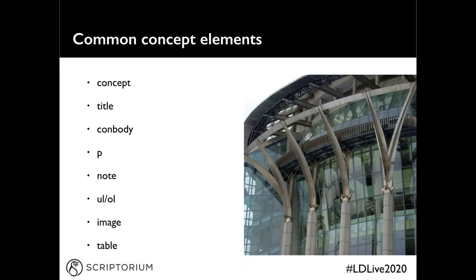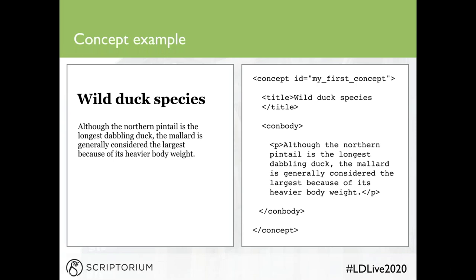Common concept elements include: concept (the container element), title, conbody (the concept equivalent of the body element), p (paragraph), note, ul or ol (unordered or ordered list), images, and tables. Here's an example of a concept topic showing both the output on the left and the tagged content on the right. This is the same content we saw in the generic topic example, but now tagged as a concept — which gives it more semantic value. We can look at the concept tag and know immediately that this is conceptual information.